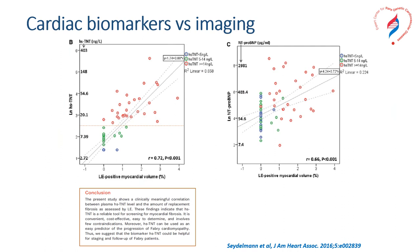Biomarkers are a useful tool. High sensitivity troponin T was proven to have a very good correlation to the presence and extent of late gadolinium enhancement in the myocardium. This makes troponin a convenient, cost-effective, and easy-to-determine biomarker that can be used as a predictor of Fabry cardiomyopathy progression and is helpful for staging and follow-up. The association is not very strong for BNP, on the other hand.